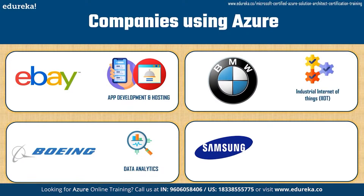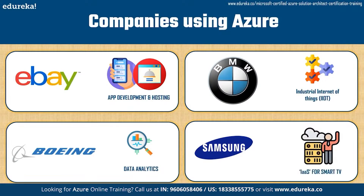BMW uses Azure's Internet of Things to make the manufacturing process within their factories more efficient by connecting all different machines, sensors, and other devices. Samsung has used Azure for its smart TV infrastructure — the entire smart TV infrastructure is on the Azure platform — achieving a significant reduction in costs and increased capacity to meet its rapidly growing customer base.